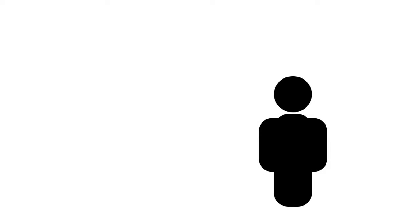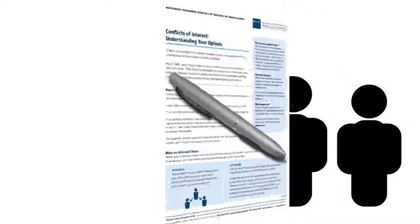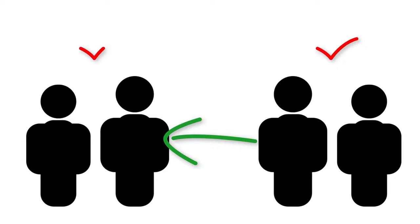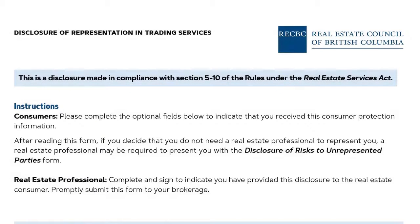In the event that a realtor has a relationship with both a buyer and seller, or a tenant and a landlord, the realtor must not represent either party unless they have obtained written consent from all parties. If this happens, a realtor can provide a referral to another designated agent who can provide the client with an agency relationship.